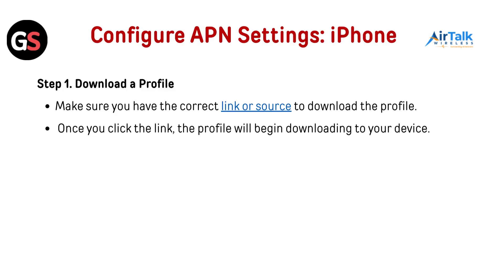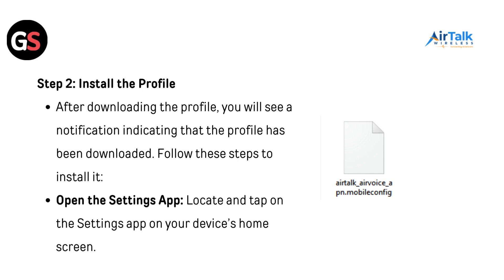Configure APN settings for iPhone. Step 1: Download a profile. Make sure you have the correct link or source to download the profile. Once you click the link, the profile will begin downloading to your device.